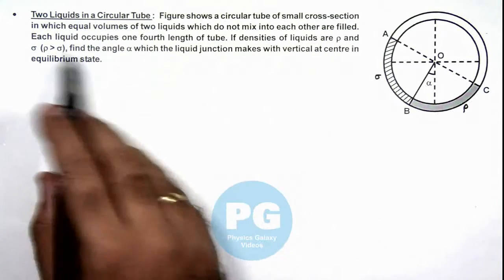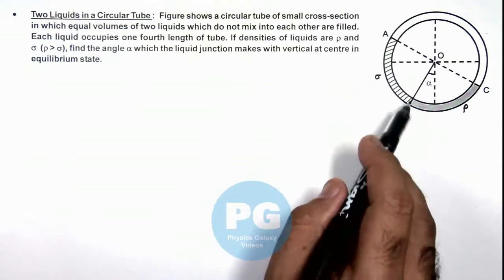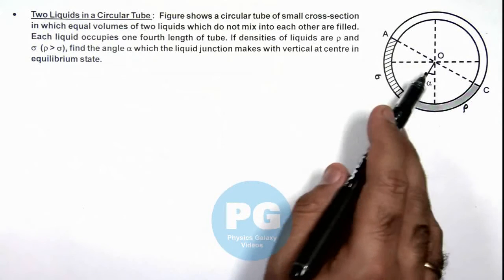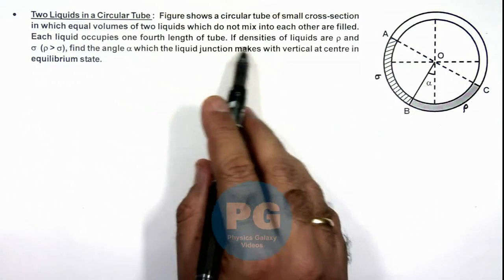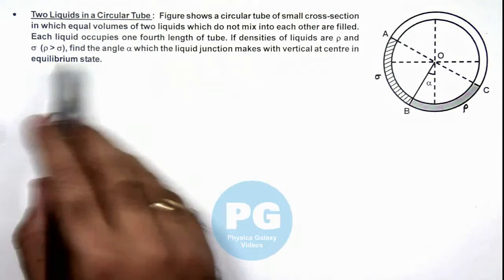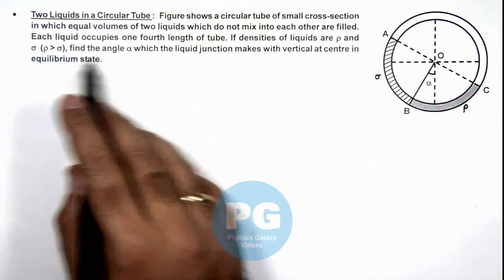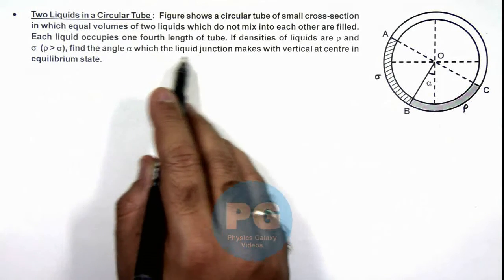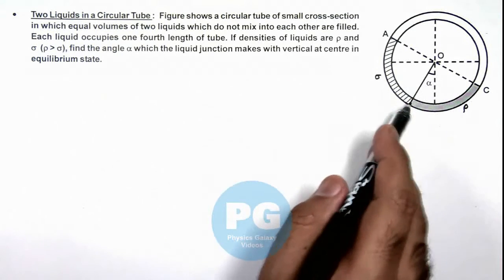Here, each liquid occupies one-fourth length of the tube, that means each liquid is subtending an angle of 90 degrees at the center of this tube. It is saying if densities of liquids are ρ and σ with the value of ρ greater than σ, we are required to find the angle α which the liquid junction makes with the vertical at center in equilibrium state.